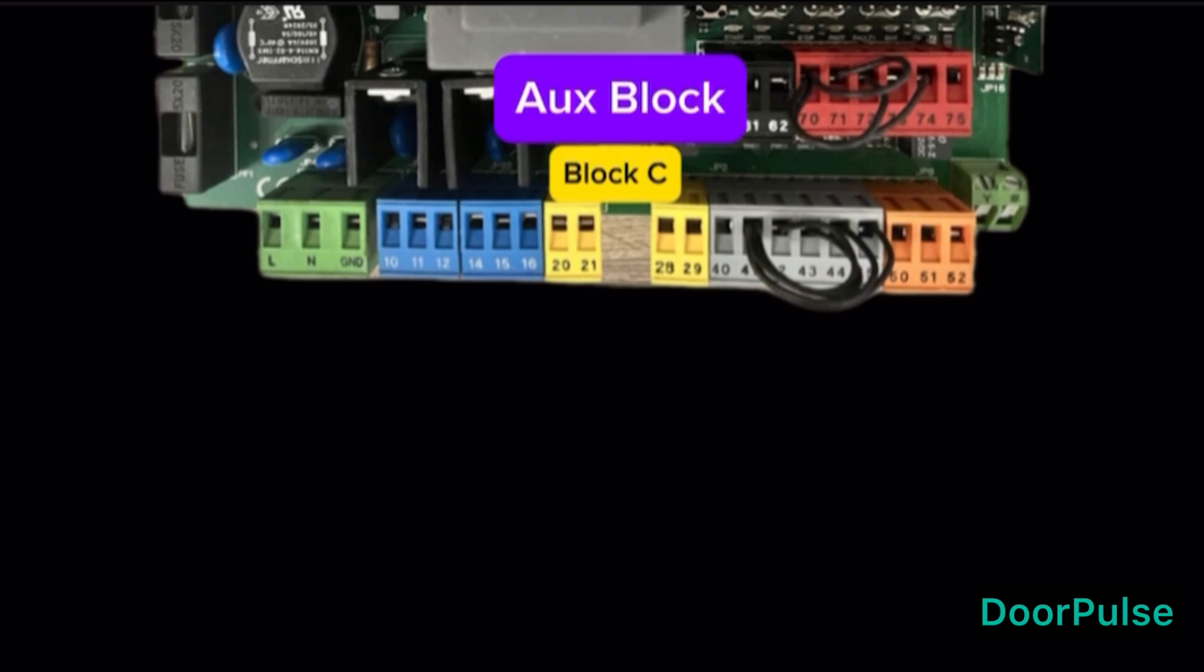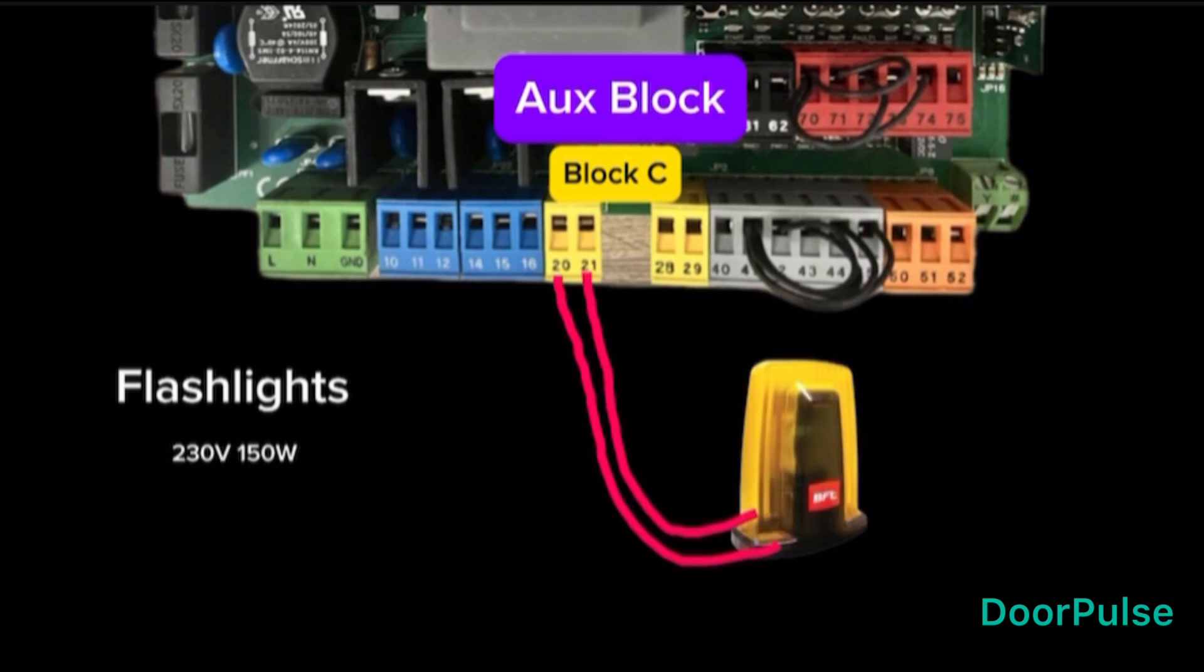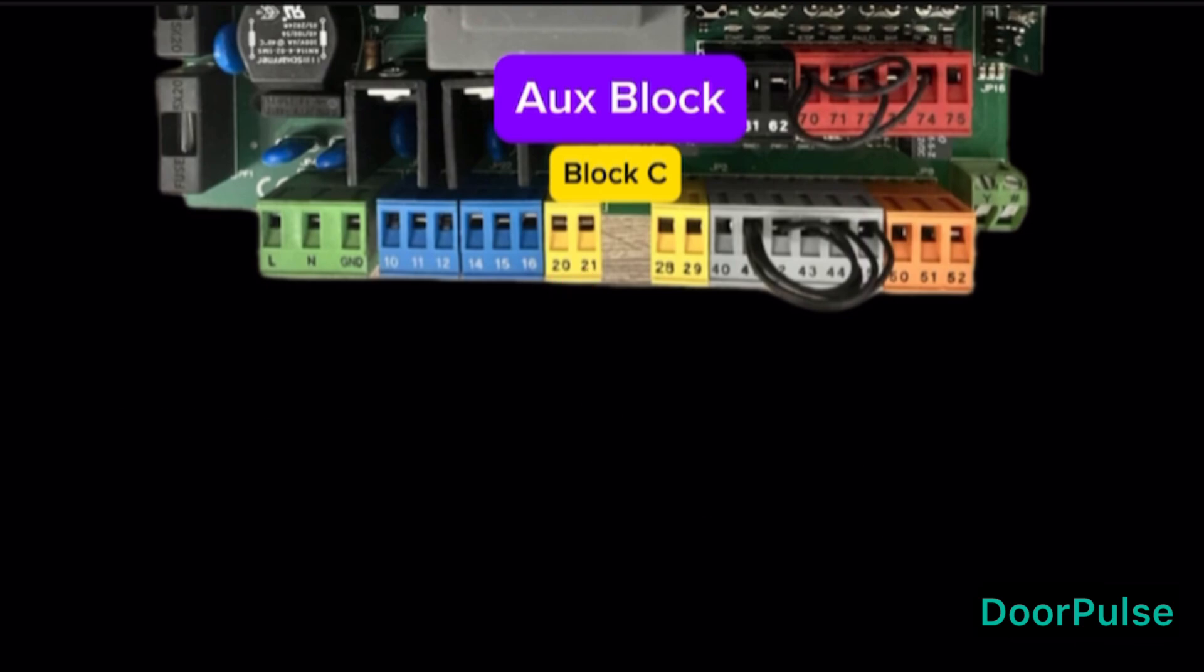Block C, AUX Block. Terminals 20, 21, flashlights block. Connect a flashlamp rating is 230 volt and 150 watts max. Terminals 28, 29, electric lock block.